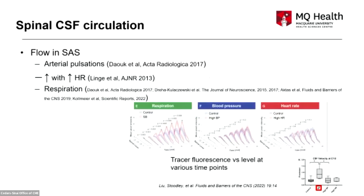Regarding flow in the subarachnoid space: we've known for a long time that arterial pulsations are an important determinant of CSF circulation both in the head and spine, and we've recently demonstrated that flow increases with heart rate. But what has emerged over the last ten years is that respiratory physiology has a much greater influence on CSF flow in the subarachnoid space — both in the spine and intracranially — so changes in respiration are much more important than cardiac changes.